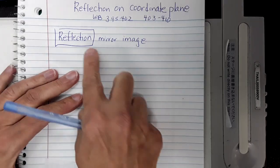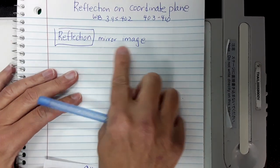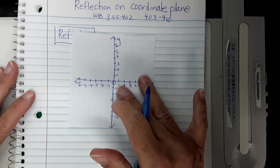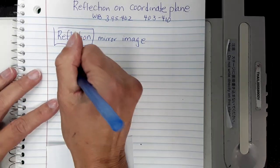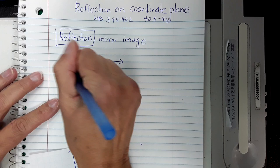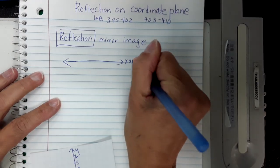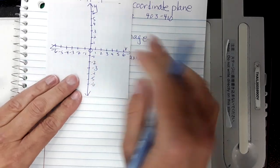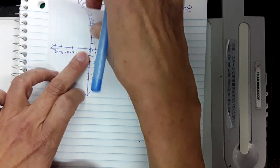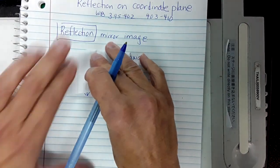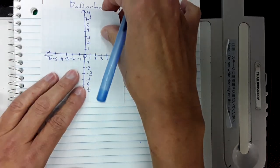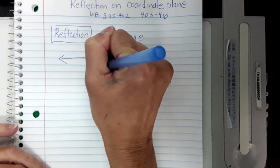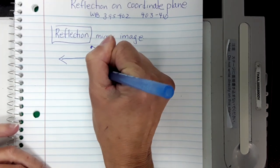When I'm talking about reflection on the coordinate plane, I'm talking about the mirror image. So here's our graph paper. Here's the x-axis. When I am finding the mirror image over the x-axis, think of it as folding it over the x-axis. So if I had a point here and I fold it over, it's going to end up over here.